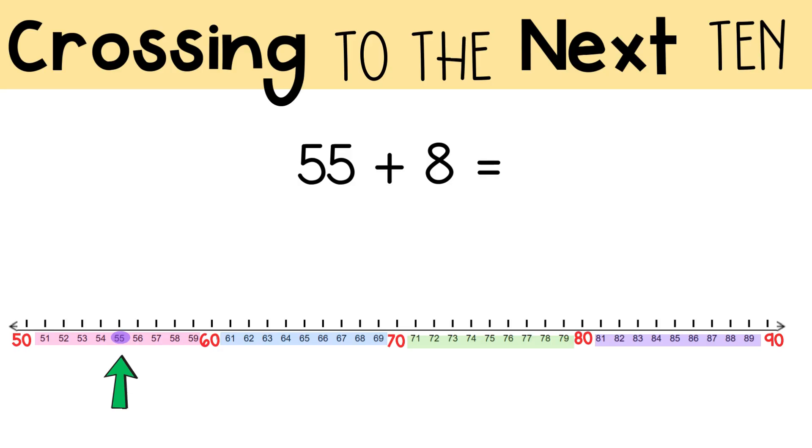You will be crossing a ten. So you need 5 jumps to get to the next 10. Now, you were supposed to add 8. So far, you've added 5. How many more jumps do you need to make? You need 3 more jumps. Now you're at 63. So 55 plus 8 equals 63. And we crossed a ten to solve.